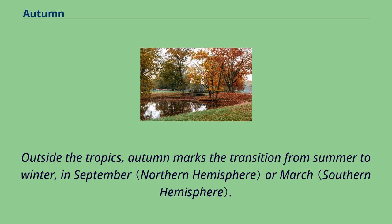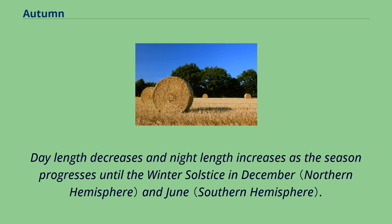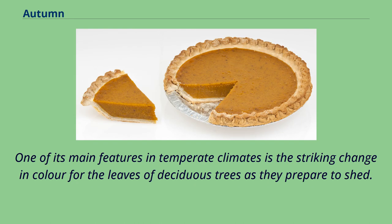Outside the tropics, autumn marks the transition from summer to winter, in September or March. Autumn is the season when the duration of daylight becomes noticeably shorter and the temperature cools considerably. Day length decreases and night length increases as the season progresses until the winter solstice in December and June. One of its main features in temperate climates is the striking change in color for the leaves of deciduous trees as they prepare to shed.